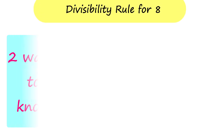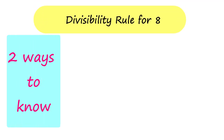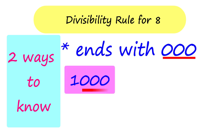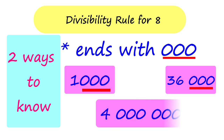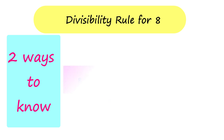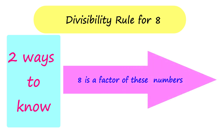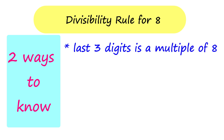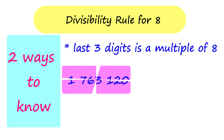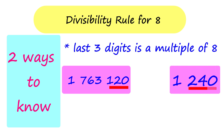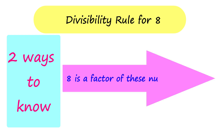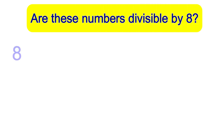Conditions for 8 are quite similar with 4, with some slight changes. Instead of two zeros, the number you want to divide should end with three zeros, like these numbers. If they do not end with three zeros, you can check the last three digits of the number. If it is a multiple of 8, then the given number is divisible by 8. 8 is a factor of all these numbers. Let's check these numbers if they are divisible by 8.